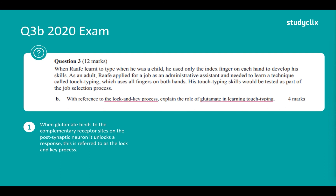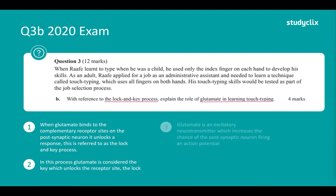When glutamate binds to the complementary receptor sites on the postsynaptic neuron it unlocks a response — this is known as the lock and key process. In this process, glutamate is considered the key which unlocks the receptor site, the lock. That's marks one and two. Mark three is saying that glutamate is an excitatory neurotransmitter which increases the chance of the postsynaptic neuron firing an action potential.